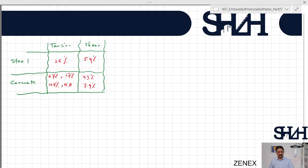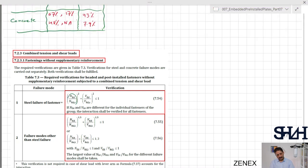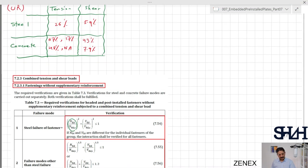Clause 7.2.3 combined tension and shear loads, 7.2.3.1 fastenings without supplementary reinforcement which is relevant to our case. Item number one is steel failure of fasteners. Here you can see N_Ed divided by N_Rd,s which represents the utilization ratio.